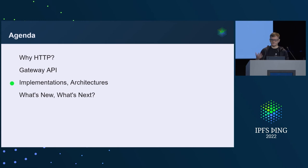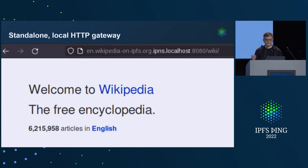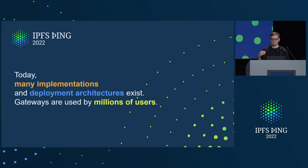Trustless retrieval and retrieval with trust are the two ways you can use the Gateway API today. Let's talk about different implementations. The first implementation was in Kubo, a long time ago, and it took us a while to close the trustless retrieval gap. If you run Kubo, IPFS Desktop, or any other implementation that follows the specs, you can run your own node accessible on localhost — essentially a single standalone HTTP server. Today we have many implementations, because a single HTTP server is not enough — gateways are used by millions of users.